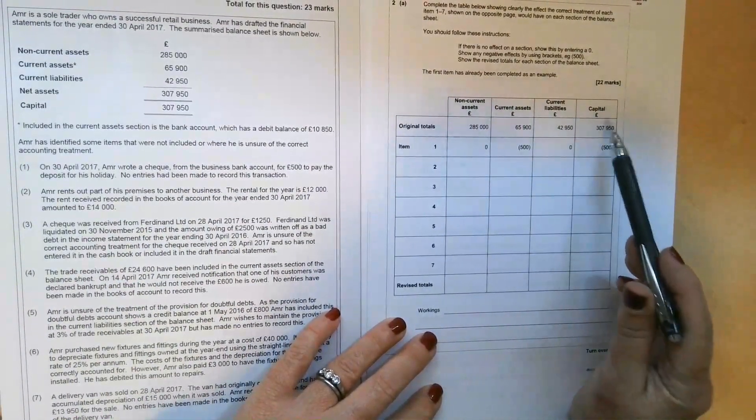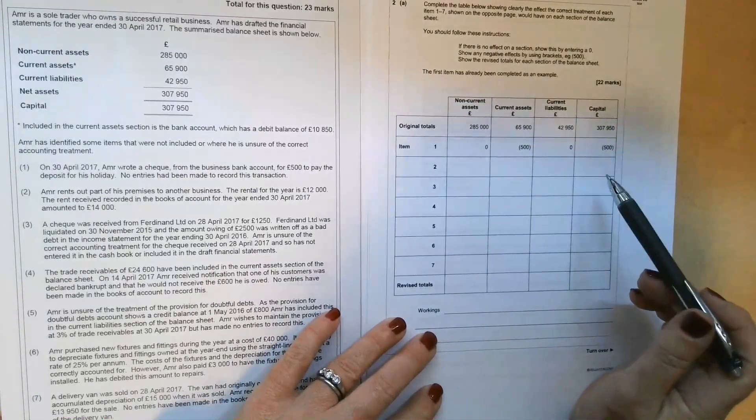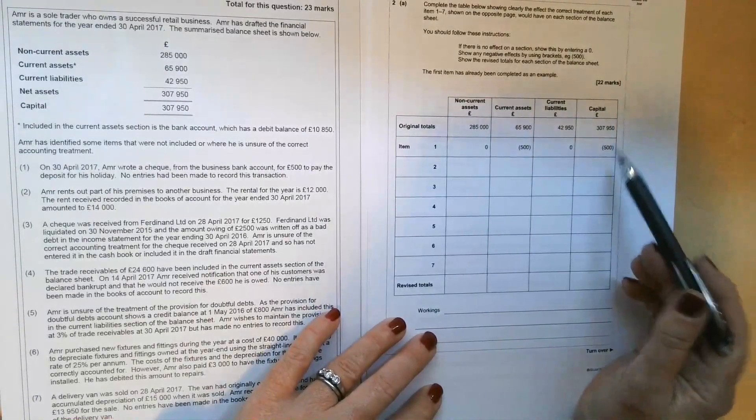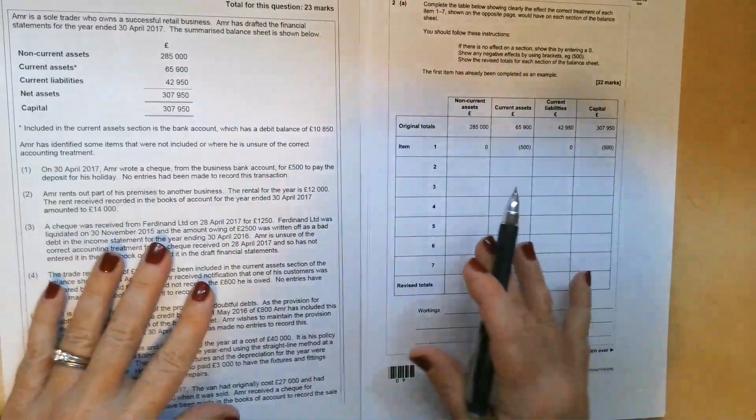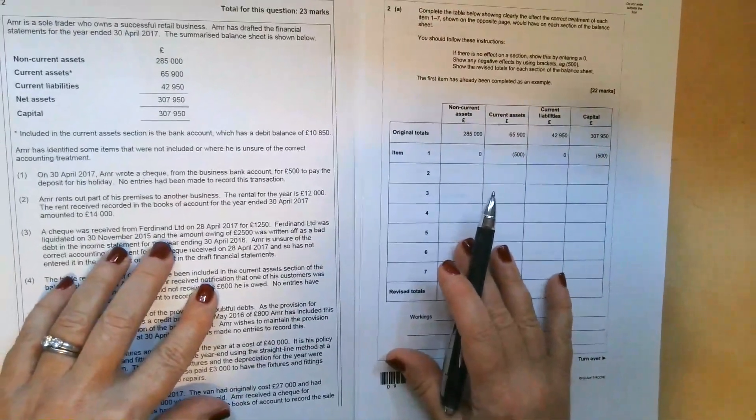Obviously remembering that anything that affects the income statement or the owner's drawings or the owner's capital is going to have an impact on the capital account. So it really does get you to think through the dual effect of all of these adjustments.